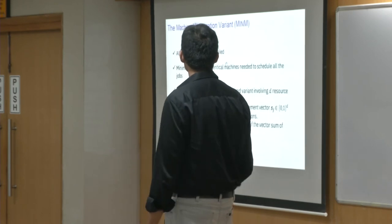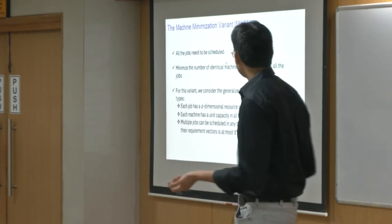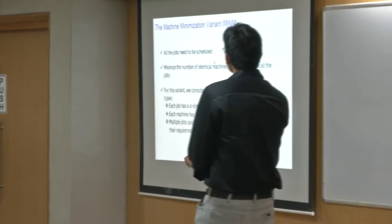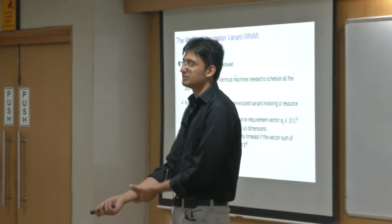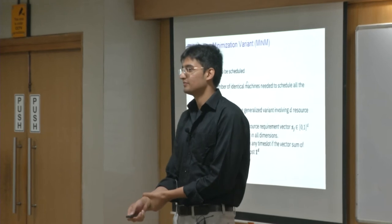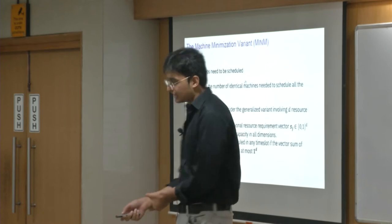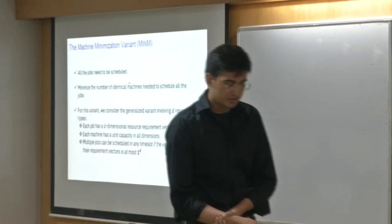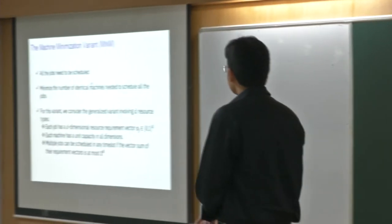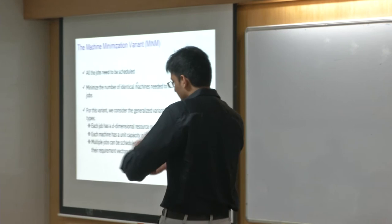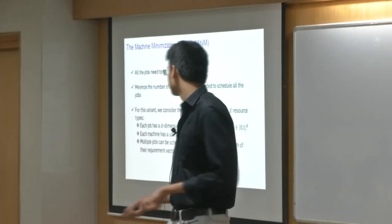The other problem — the machine minimization variant — has more of a bin packing flavor. You need to schedule all the jobs and minimize the number of identical machines required. The authors also consider a more generalized variant where the resource of a job is not just a scalar but a d-dimensional vector, and you have to respect resource constraints in every dimension. It's much like a generalization of what's known as the vector packing problem.